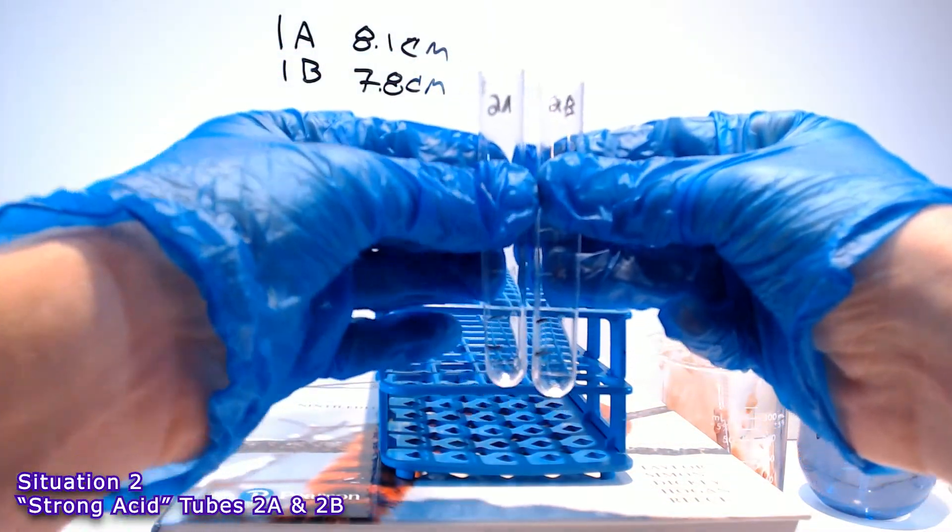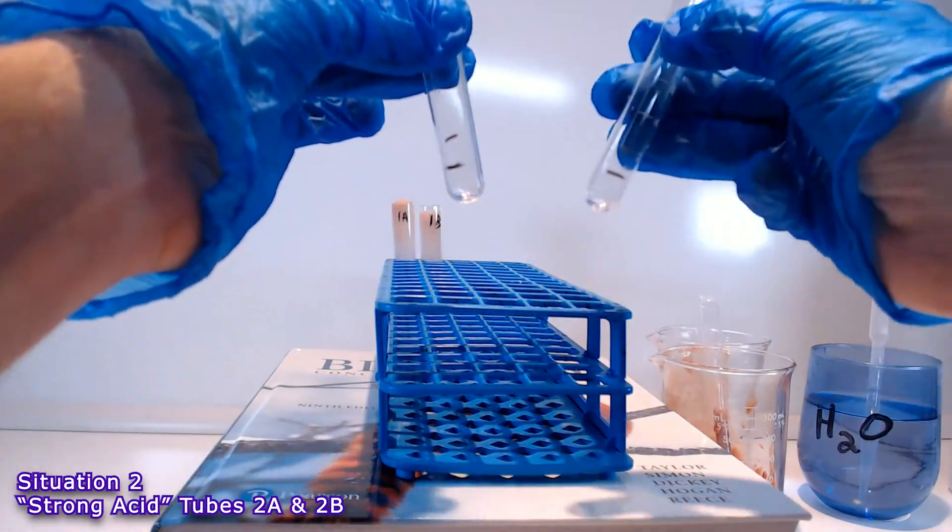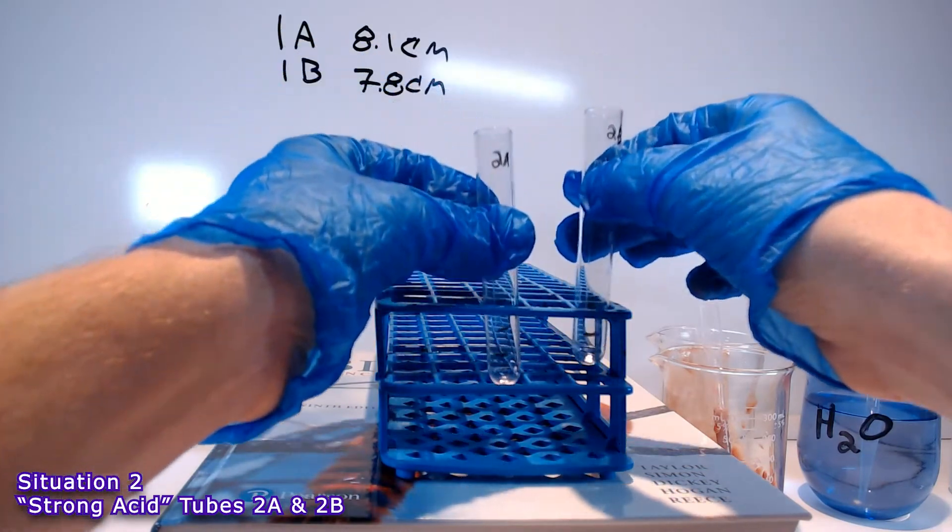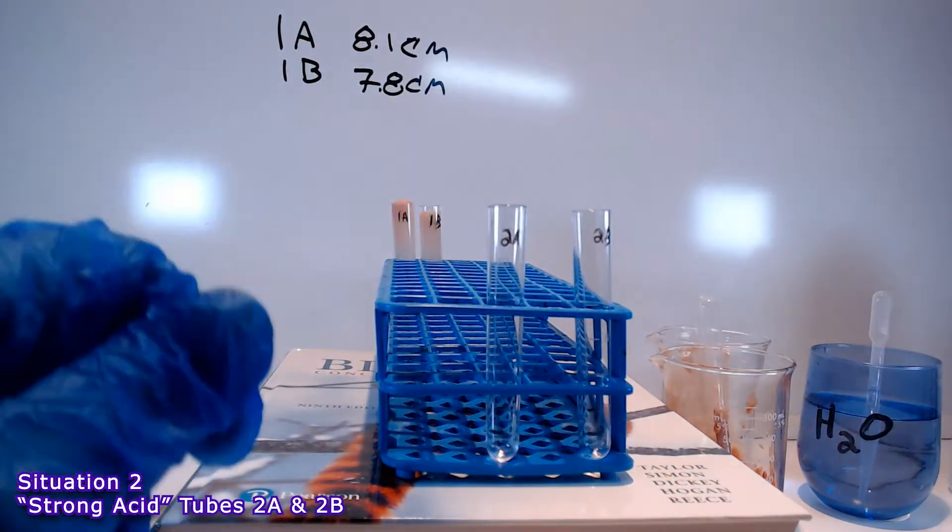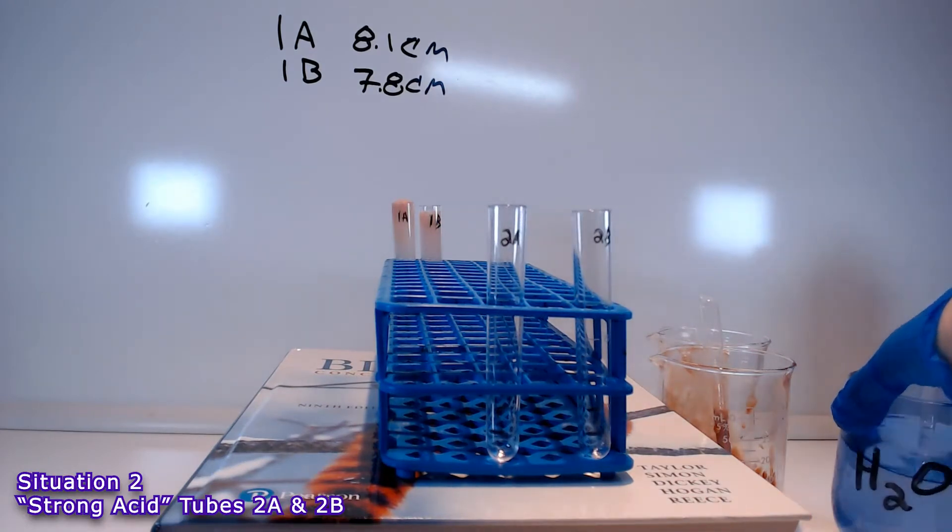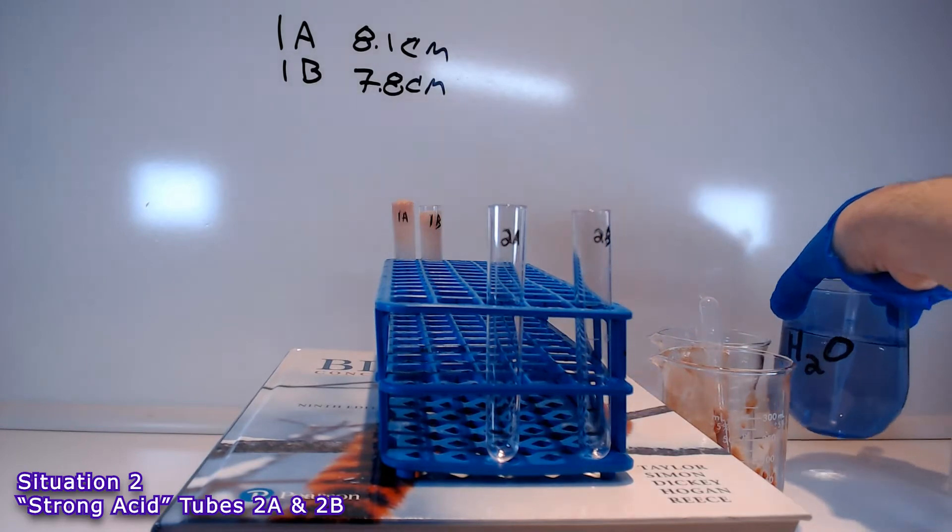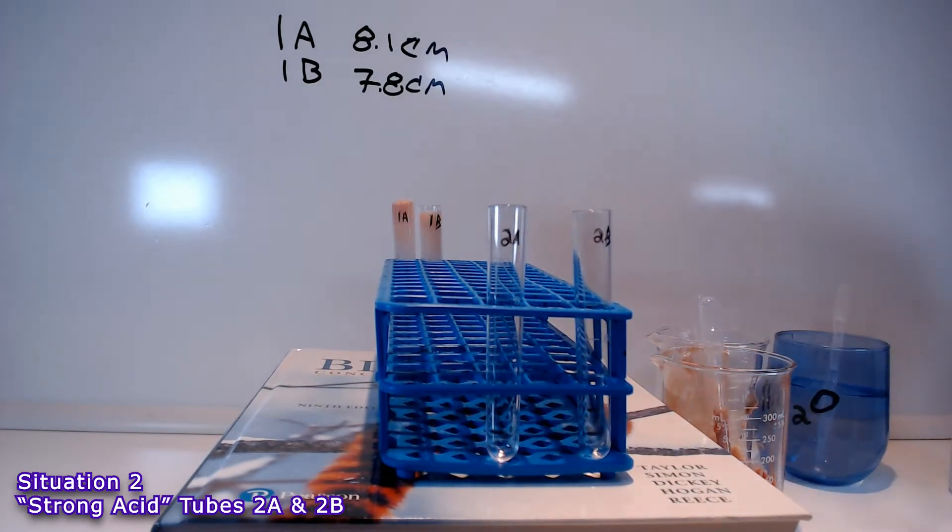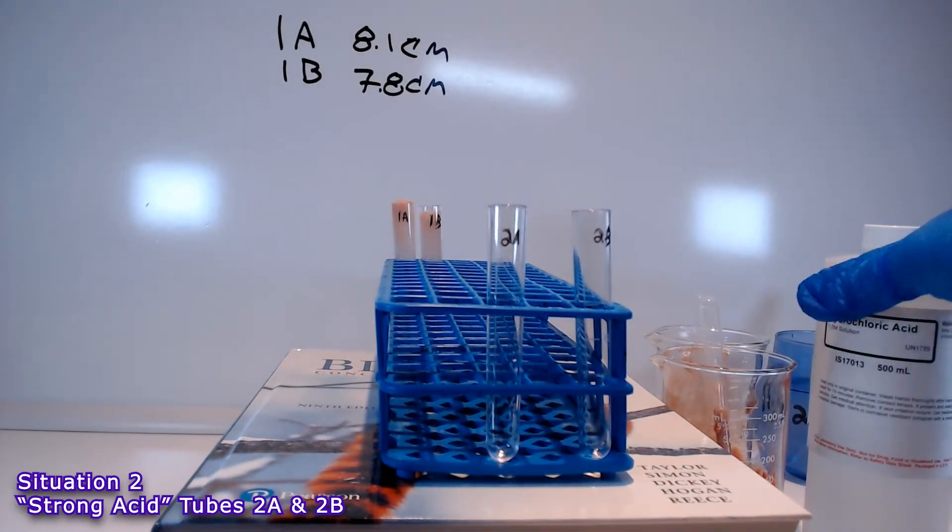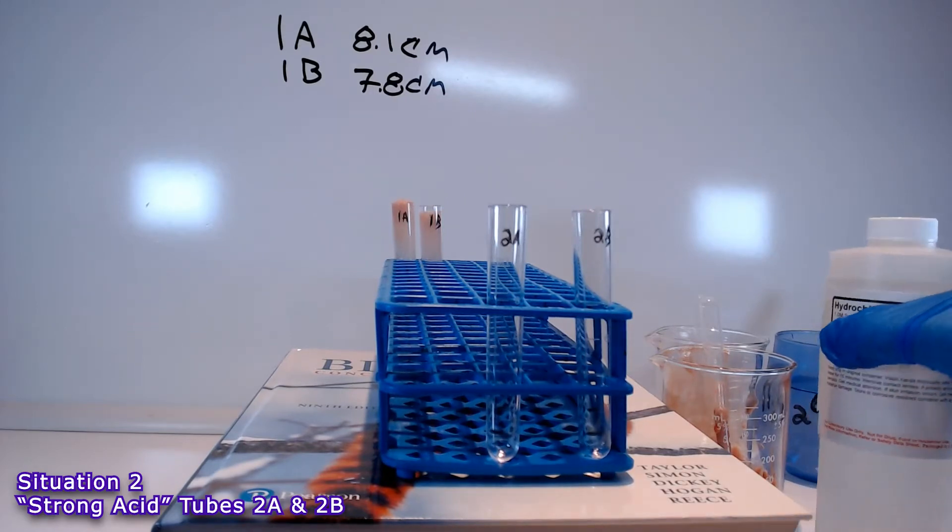Now we have test tubes 2A and 2B, and they're set up in just the same way. There's a mark 1 centimeter from the bottom and 2 centimeters from the bottom. Instead of adding water to the 1 centimeter line, in situation 2, we want a low pH. The instructions call for sulfuric acid, but I don't have any on hand, so I'm going to use hydrochloric acid instead. Still a strong acid.